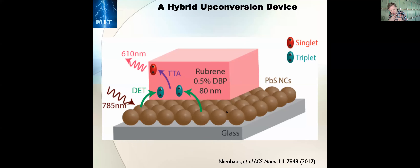There is a challenge, however: in order to have triplet-triplet annihilation occur, you've got to generate those triplets. The downside of organics is that the triplets themselves are not very absorptive, so you can't easily generate those triplet states directly. You need some kind of sensitization of these molecules in order to get this up-conversion to happen. I'm going to describe a device aimed at doing exactly that — sensitizing this triplet-triplet annihilation process.